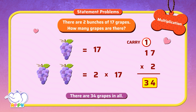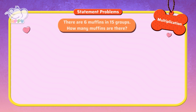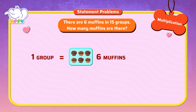Fantastic! There are 6 muffins in 15 groups. How many muffins are there? One group has 6 muffins, so 15 groups have 15 times 6 muffins. We multiply: 15 times 6.